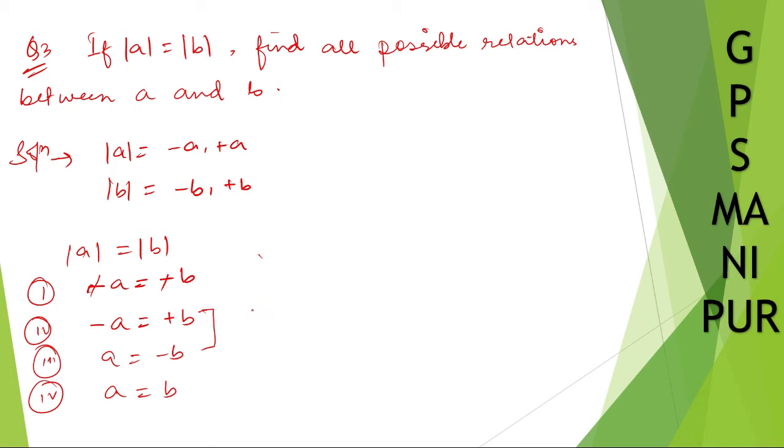These two, I can combine, these two, I can write same. If you take minus sign this side, it will become A is equal to minus B. So, A is equal to B, these two are same.